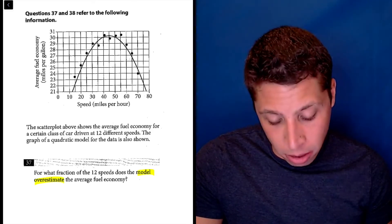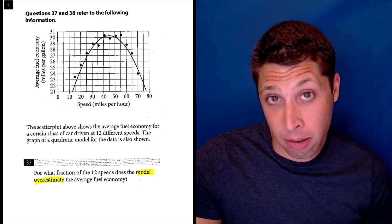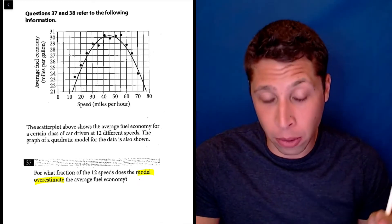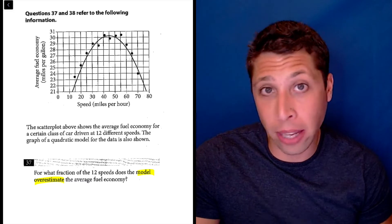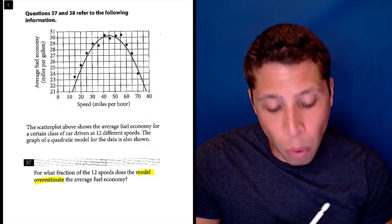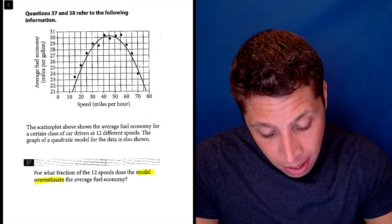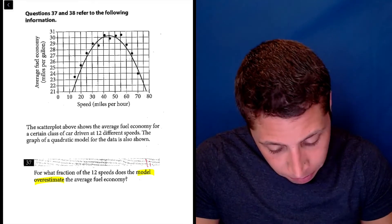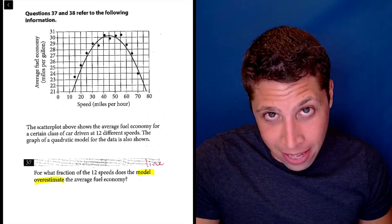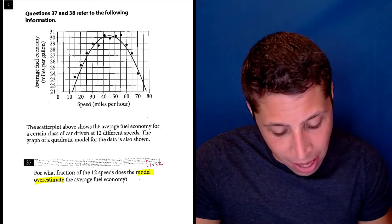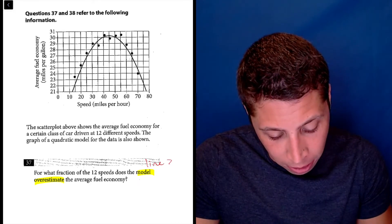So the model is the line, the parabola, because the data is represented by the dots. So what we're looking for is where does the line overestimate the data? Meaning, when is the line greater than the points?